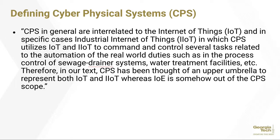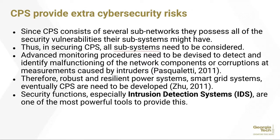That gives a good sense of what the broad vision of the smart city is and how many different cyber-physical systems clearly underlie that vision. The authors describe what cyber-physical systems means: CPS are interrelated to the Internet of Things, and in specific cases the Industrial Internet of Things, in which CPS utilizes IoT and IIoT to command and control several tasks related to the automation of real-world duties, such as process control of sewer drainage systems and water treatment facilities. CPS has been thought of as an upper umbrella to represent both IoT and IIoT, whereas Internet of Everything is sort of out of scope. Clearly, cyber-physical systems provide extra security risks — they consist of a number of sub-networks and therefore possess all the security vulnerabilities that these sub-networks might have.